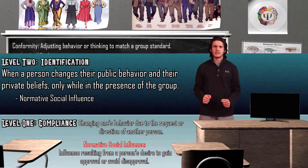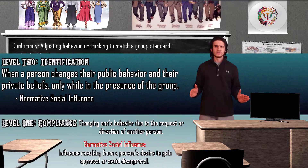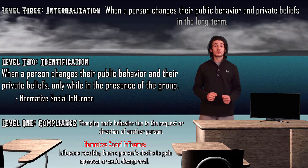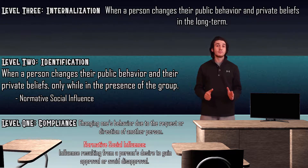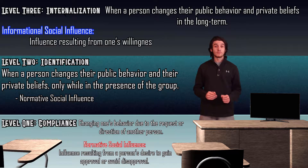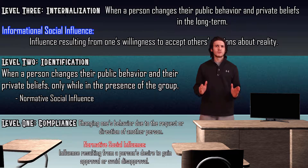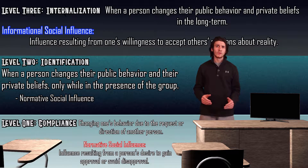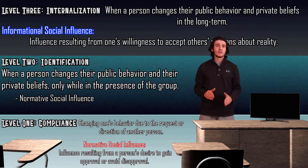Our third and final level of conformity is internalization, which is when a person changes their public behavior and private beliefs in the long term. This is usually the result of an informational social influence, which are influences resulting from our willingness to accept others' opinions about reality.